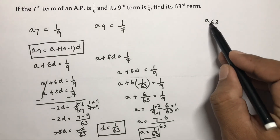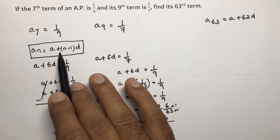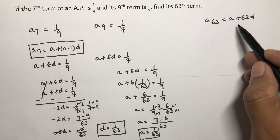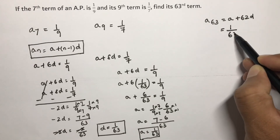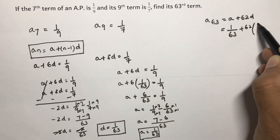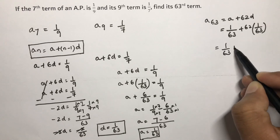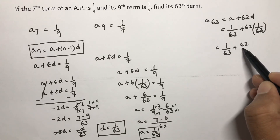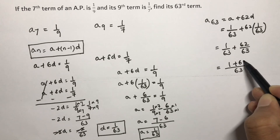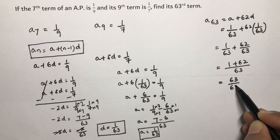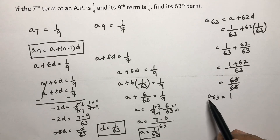Now we need to calculate a63. a63 = a + (63-1)d = a + 62d. Substituting: 1/63 + 62 × (1/63) = 1/63 + 62/63. Taking LCM of 63, we get (1 + 62)/63 = 63/63, which equals 1. So a63 value is 1.